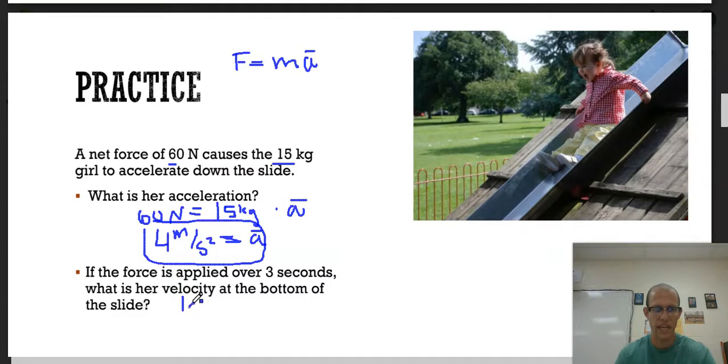At 1 second, she is traveling 4 meters per second. At 2 seconds, another 4 meters per second added on to that, which is 8. At 3 seconds, another 4, which is 12. So if she is going down this slide for 3 seconds and there is no friction whatsoever, then she is going to be traveling 12 meters per second at the bottom of the slide.